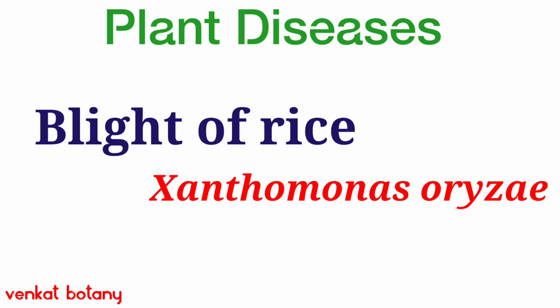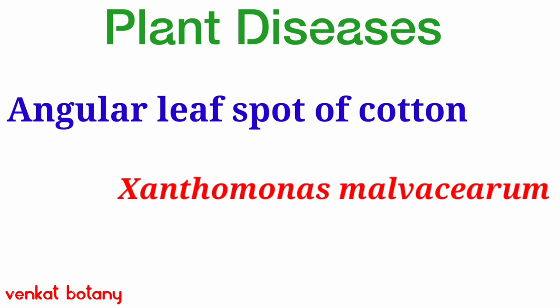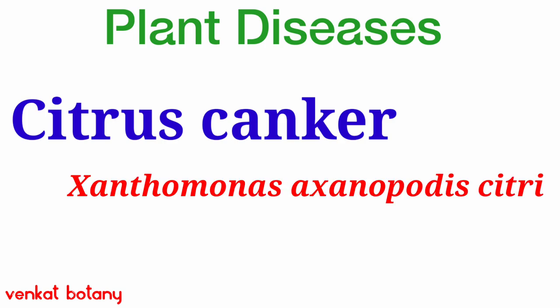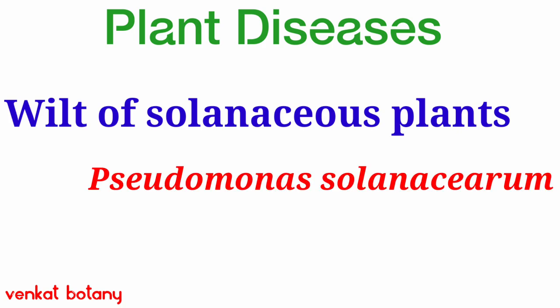Red rot of sugarcane caused by Colletotrichum falcatum. Blight of rice caused by Xanthomonas oryzae. Angular leaf spot of cotton caused by Xanthomonas malvacearum. Wilt of solanaceous plants caused by Pseudomonas solanacearum.